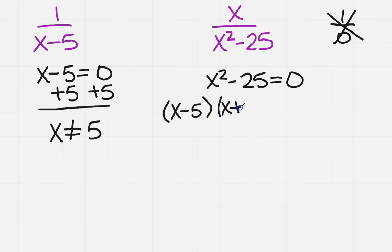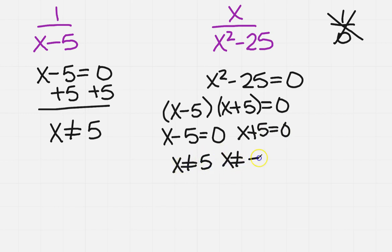You could have that equal to 0. Then you would set each one of your terms equal to 0 and solve. That would give me that x cannot be 5 and x cannot be negative 5.